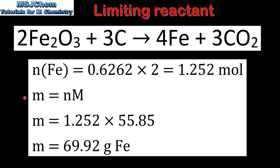Because the question is asking for the mass of iron we need to convert from moles to mass, using the equation: mass equals amount in moles multiplied by molar mass. The amount in moles is 1.252 and the molar mass of iron is 55.85 grams per mole. When multiplied together this gives us 69.92 grams of iron.